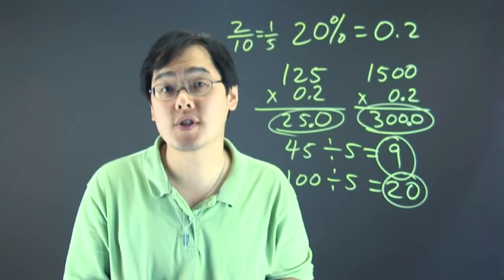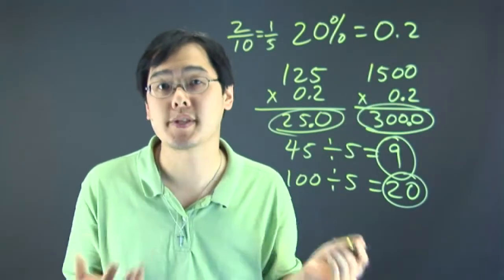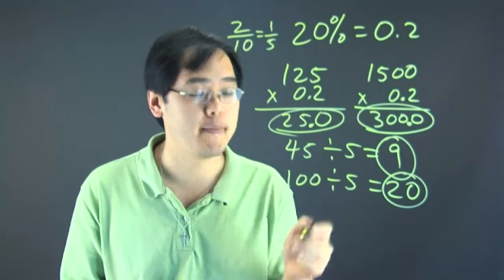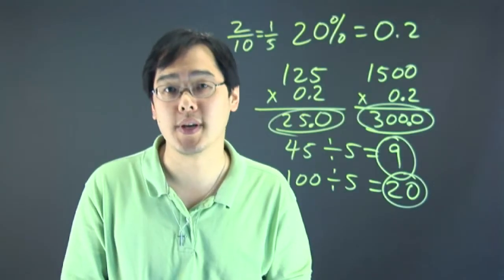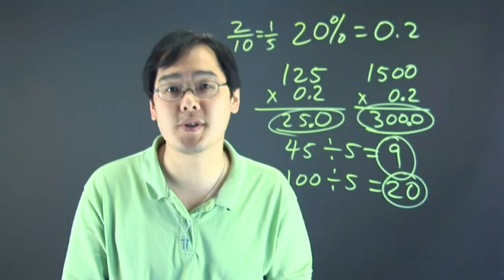But really, there's two little tricks that you can use to figure out 20%. Either multiply by 0.2, which is almost like multiplying by 2, or you can divide by 5. And those are really quick ways to get there. So, I'm Jimmy Chang, and there's a couple of math tricks to figure out 20%.